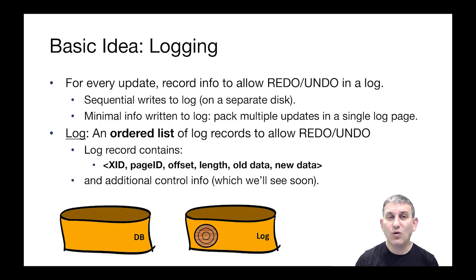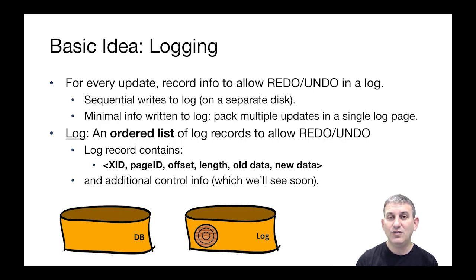What is the log? In essence, it's an ordered list of log records written to the disk that allow redo and undo. A log record has a transaction ID and a page ID — this transaction updated this page — and then information about how to redo or undo the update to that page. For example, an offset and length, and the old version of that range of bytes and the new version of that range of bytes. That supports redo — we can replace with the new data — or undo — we can replace with the old data. The log record will also have additional control information.